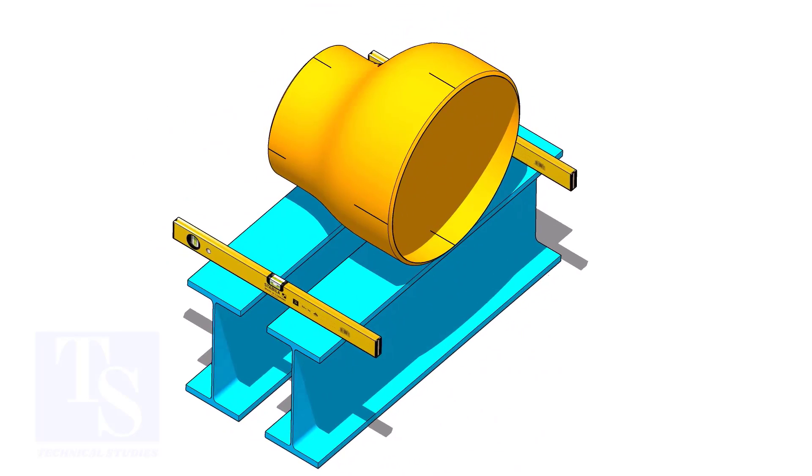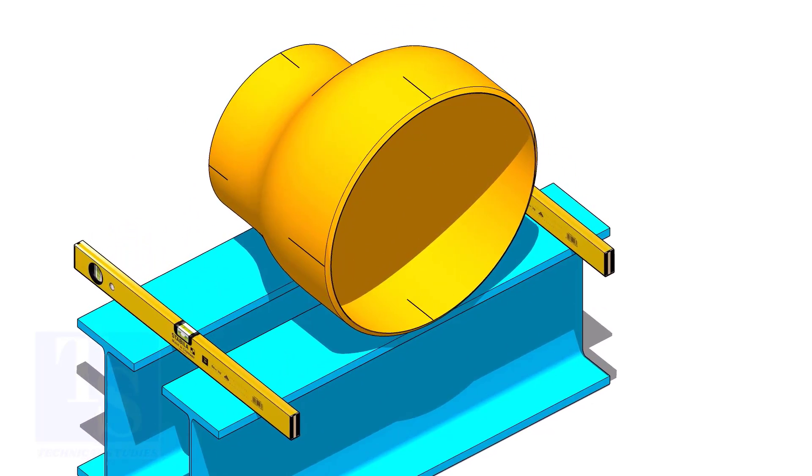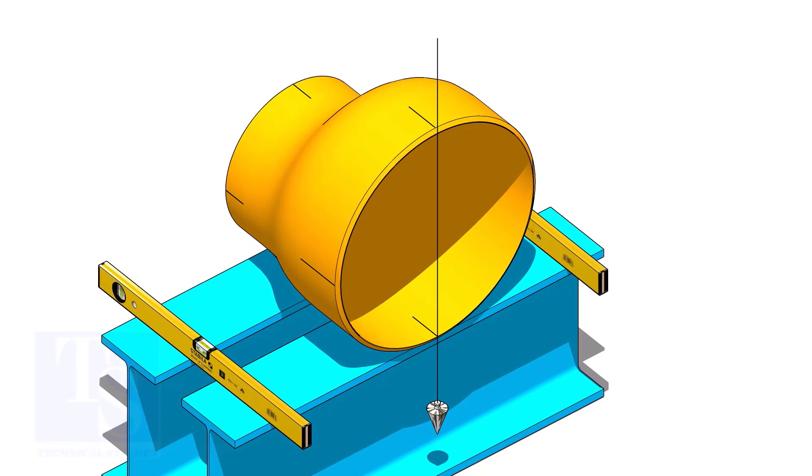Put the reducer on supports. Plumb the reducer and put packing on both sides.